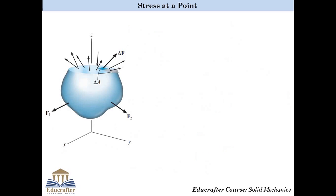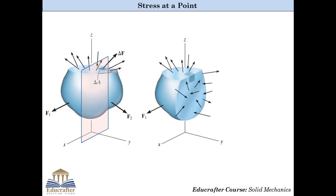So we have seen that on a single plane there is one normal stress component and two shear stress components. Let us further examine this by taking other planes. Let us cut the body through a plane perpendicular to the Y axis, divide the section into an infinite number of parts, and observe one of the elements. Again, we will have three stress components corresponding to three mutually perpendicular directions. The plane is perpendicular to the Y axis, so we have sigma Y, tau Yx and tau Yz — sigma Y is the normal component and the other two are shear components.